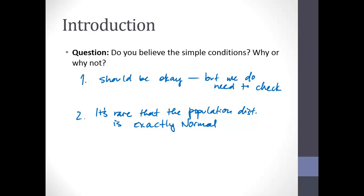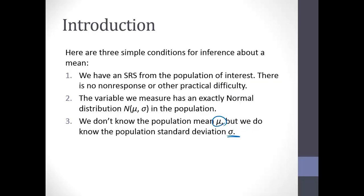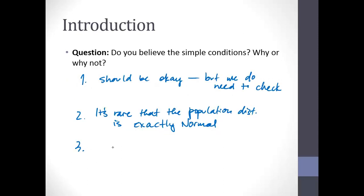Does it seem likely that we'd know the standard deviation but not know the population mean? That's kind of weird too — we wouldn't expect to know sigma if we didn't know mu. So condition three is totally unrealistic. These conditions provide good motivation for where we're going, and we'll come back and try to get rid of these conditions that aren't really practical.